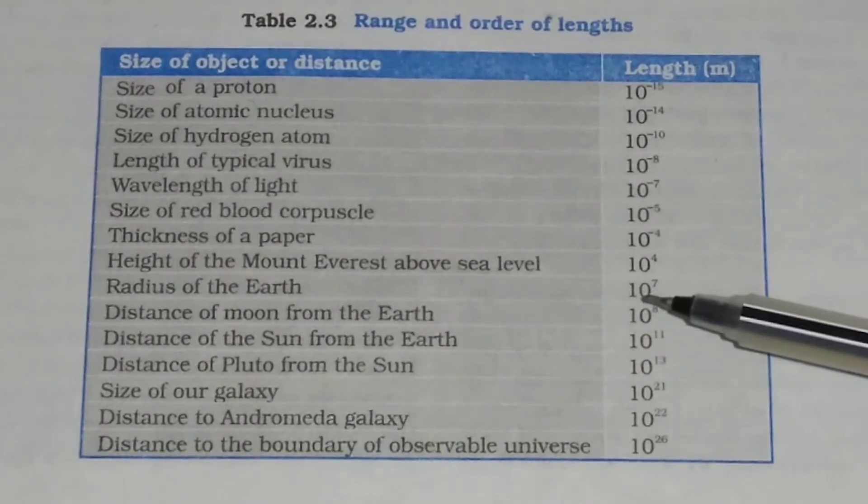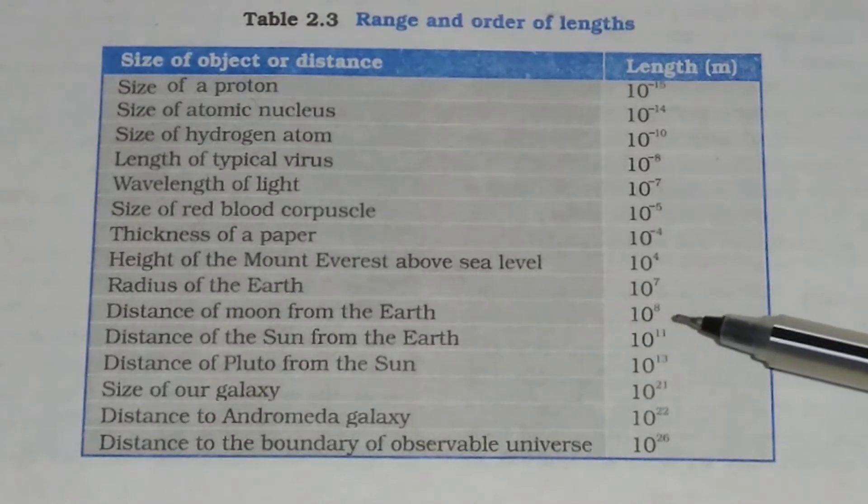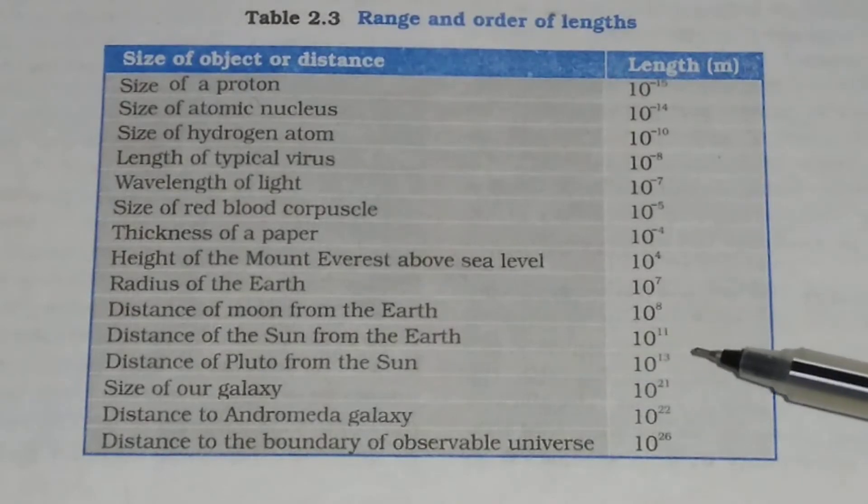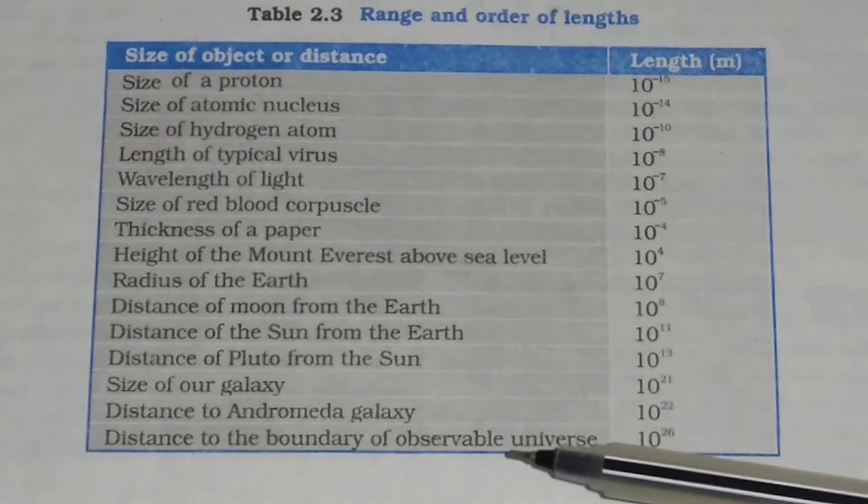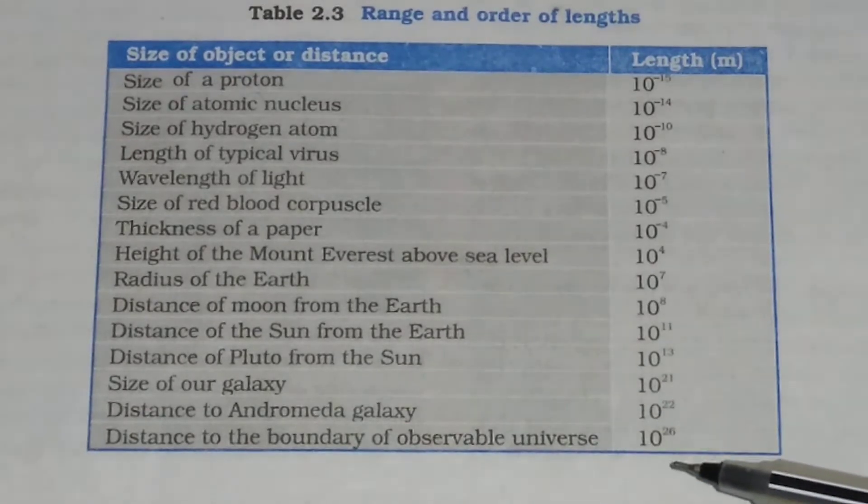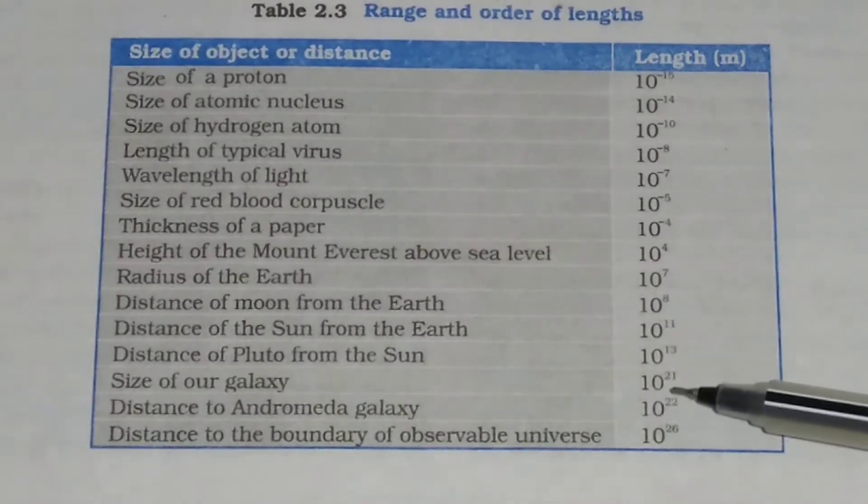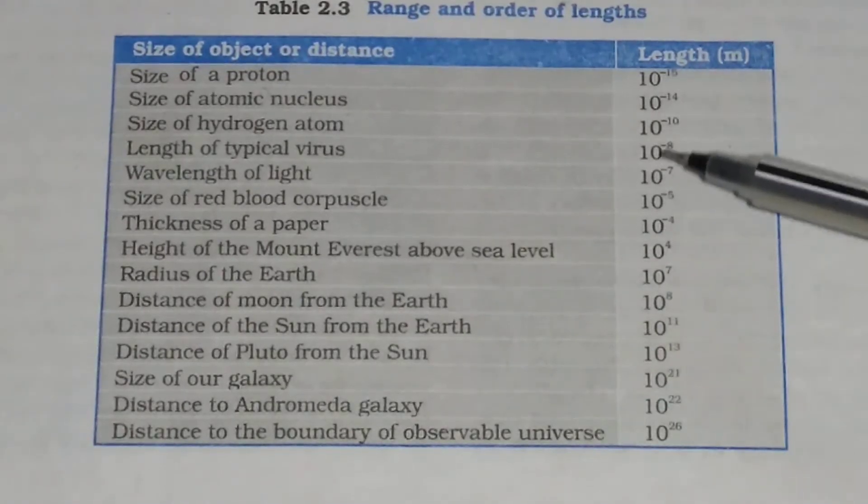Radius of earth is 10 to the power 7 meter. Distance of moon from earth is 10 to the power 8 meter. Distance of sun from earth is 10 to the power 11 meter. Similarly, distance of the boundary of observable universe is 10 to the power 26 meter. So, these are some range and order of lengths.